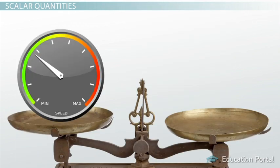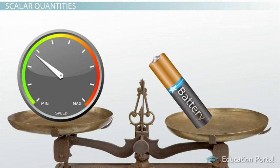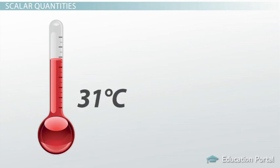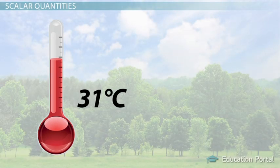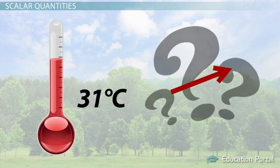These include speed, mass, electrical charge, energy, and temperature. Let's look at temperature as an example. If I tell you it is 31 degrees Celsius outside, you know it is pretty warm. The number alone is enough to provide all the information you need. To take it a step further, there isn't even a way to logically put a direction on a temperature measurement.